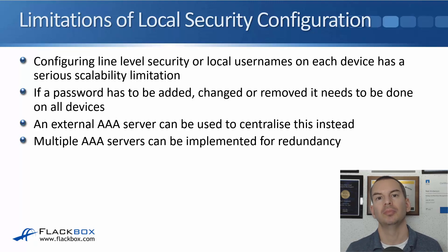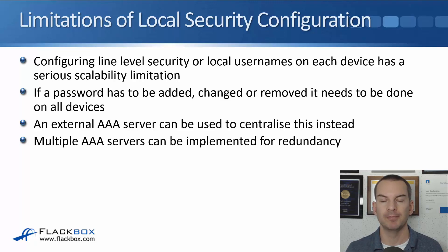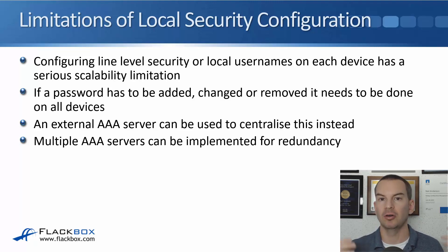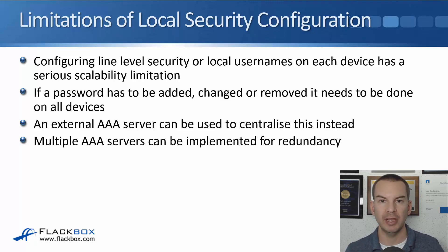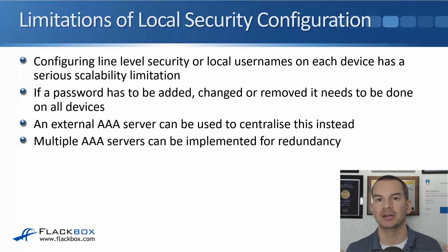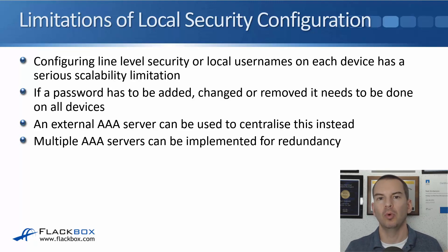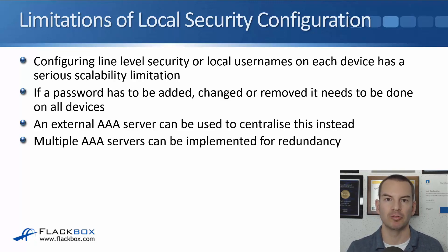Rather than having to configure all of our different devices with security details, a better idea is to use an external AAA server instead. That allows us to centralize the security — all the usernames, passwords, and authorization details are configured on the AAA server, and all of your routers and switches point at that server. Whenever anybody wants to log in, it checks with the AAA server if they are authenticated and authorized. In the real world, we'll put in at least two AAA servers for redundancy in case one goes down.